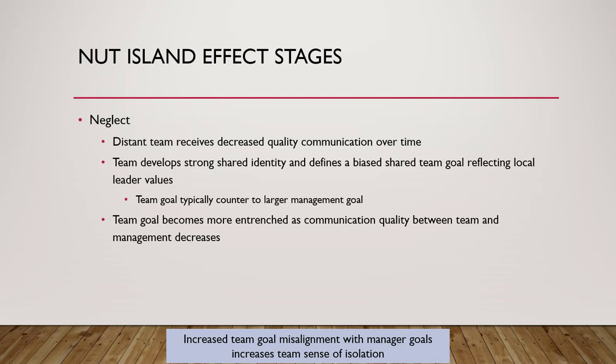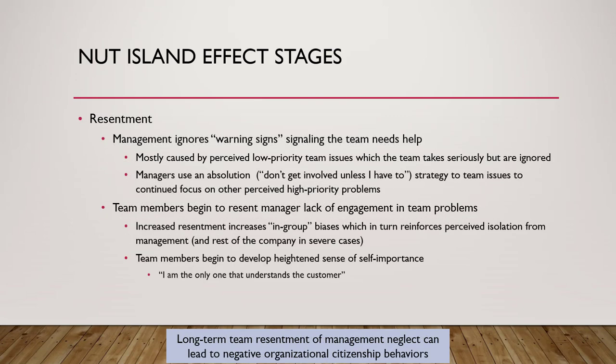The team's goals become more entrenched as communication between the team and the manager decreases — there's no constant reinforcement of what goals should be or their importance. In the second stage, resentment, the team has become distant from the manager, who is basically beginning to ignore the team because he has higher priority problems. The manager views the team as self-sufficient. Many managers mean well when they say they won't get involved unless they have to, or that the team knows the customer better. Unfortunately, what that communicates is that the team can do whatever they want as long as they don't cause trouble — so the team begins to hide problems.